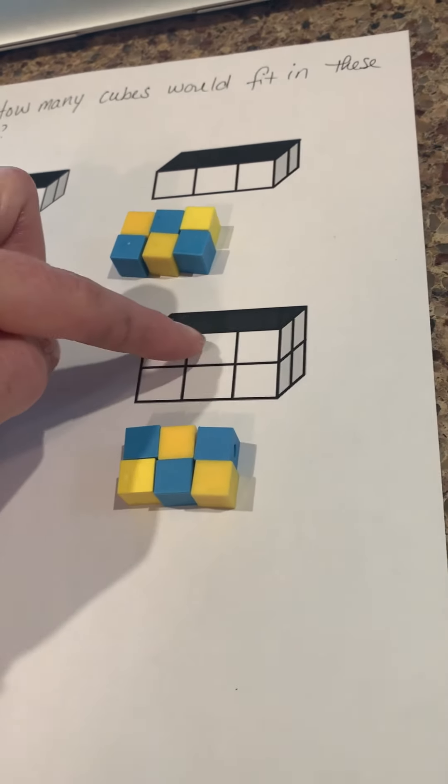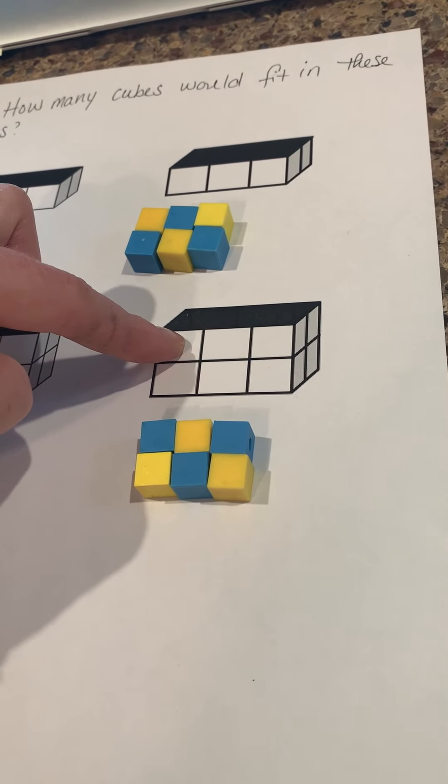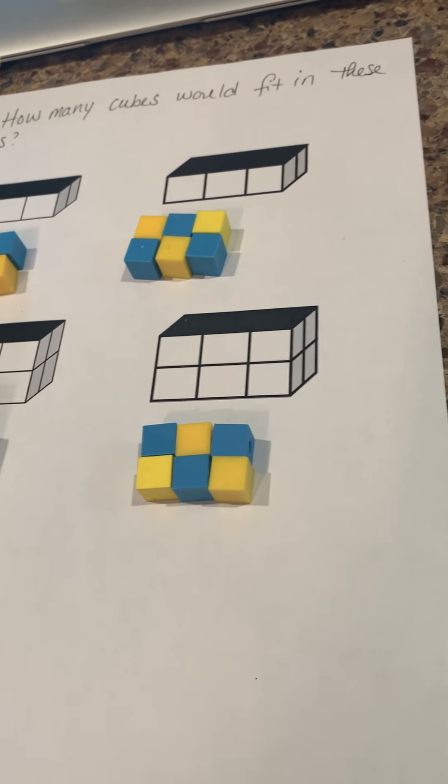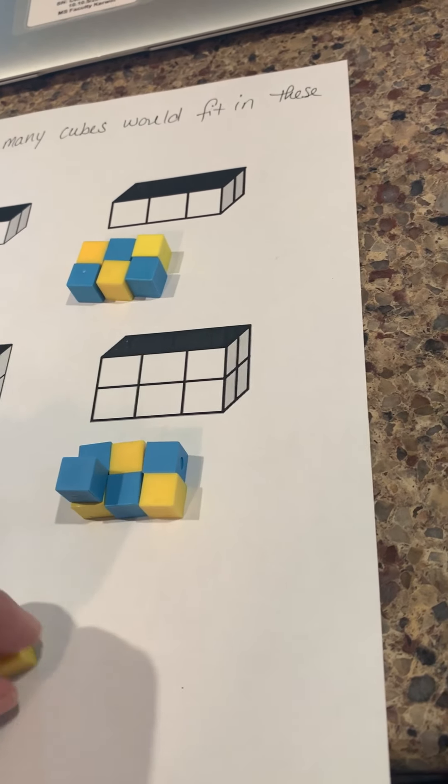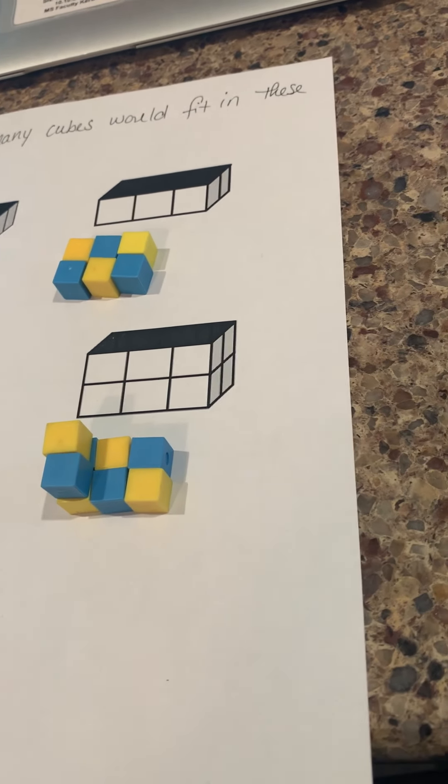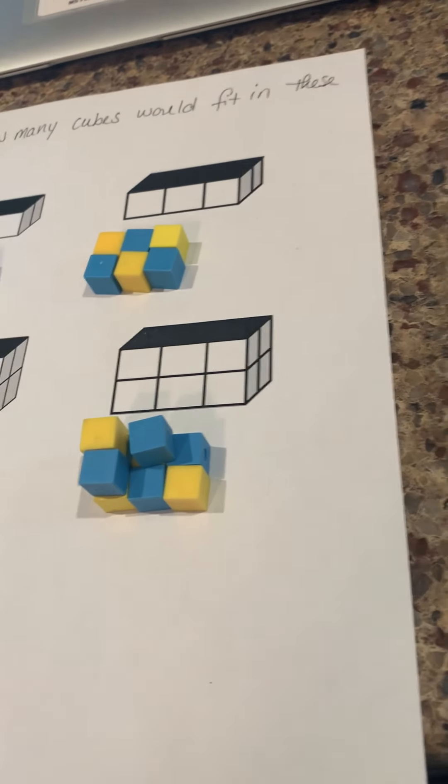But we're not done yet because now I see this one has another layer on top. So I know I'm going to need six more cubes right on top of that guy. So I'm going to put them like this. Can you tell I like to do alternating colors?